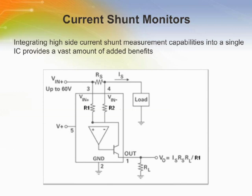Current shunt monitors are a unique amplifier family solely dedicated to high side current sensing applications, containing all the necessary functions needed to perform the measurement easily and economically. With a current shunt monitor, the voltmeter has been replaced by a specially adapted instrumentation amplifier that amplifies the voltage developed across the shunt resistor. They provide a ground reference current or voltage source output that is proportional to the current of interest, and high common mode rejection without the difficulty of resistor matching.